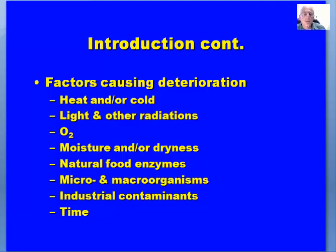Food enzymes found naturally in a particular food product, particularly in fruits and vegetables, can cause deterioration. Certainly micro and macro organisms, and we'll spend a fair amount of time looking at these. Industrial contaminants, and certainly over time all food products tend to have a loss in quality and maybe some deterioration. One of the food trivia questions often asked is: what is the only food that never spoils? The answer typically has been honey.